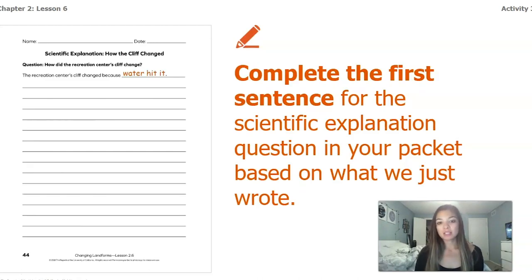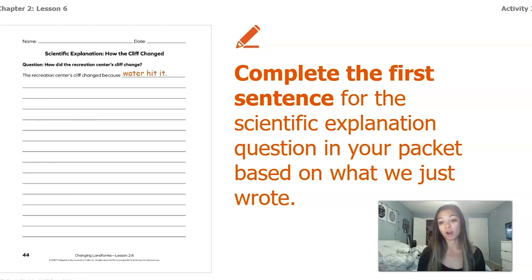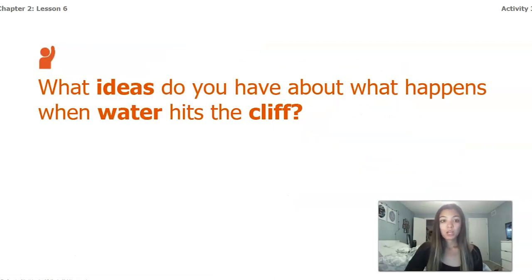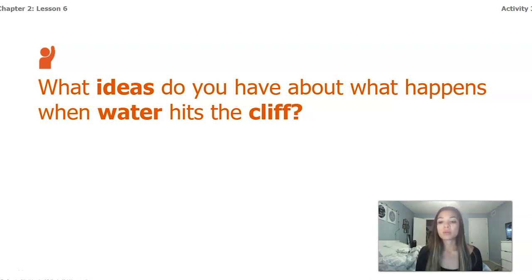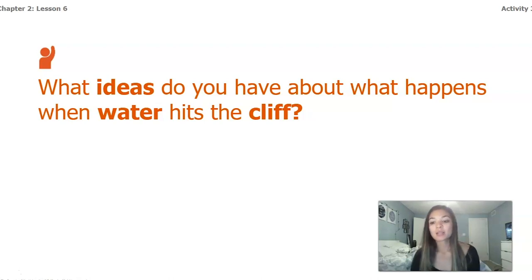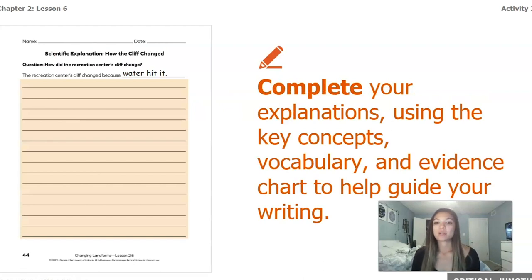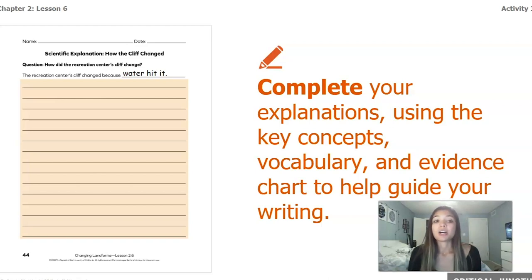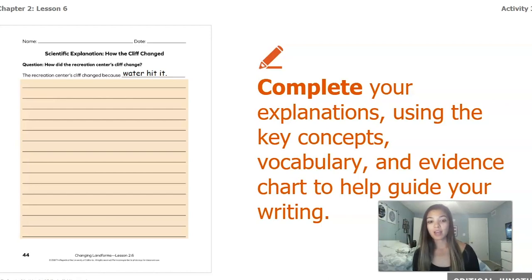Complete the first sentence of your scientific explanation in your packet based on what we just wrote. If you don't have a packet, copying what we've written on a blank piece of paper works. Think about what we've learned about how water can actually change a landform. Your task is to complete your explanation using key concepts, vocabulary, and evidence from your evidence chart to guide your writing. Look back at all the materials in your packet for this chapter and last chapter, and complete the rest of the explanation on your own. Pause the video and we'll talk together at the end.